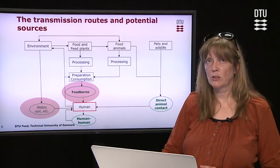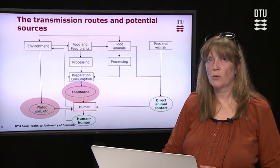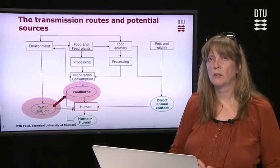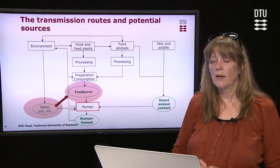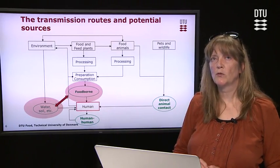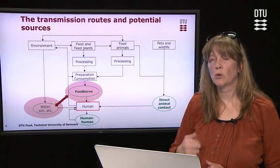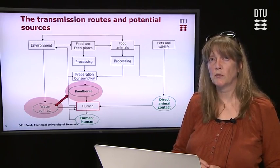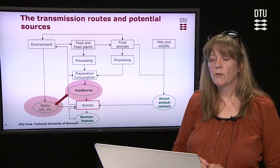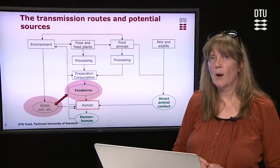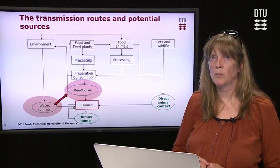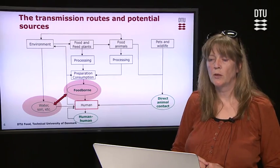One of the big challenges in source attribution is sometimes to distinguish between the environmental and the foodborne route, and particularly between water and food. That is because water is also used in food production, so it is very crucial that we define where in the production chain we actually do the attribution.